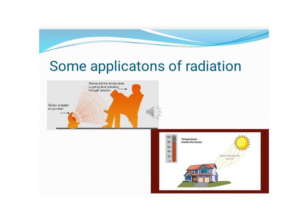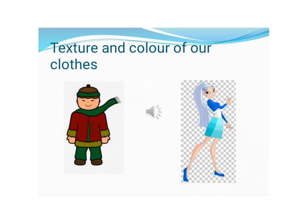This happens because of the smooth reflective surface. Similarly, houses are painted light colors so they absorb less heat from the sun and stay cool during summer.